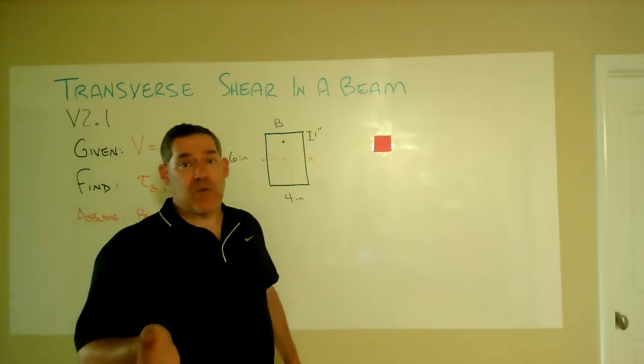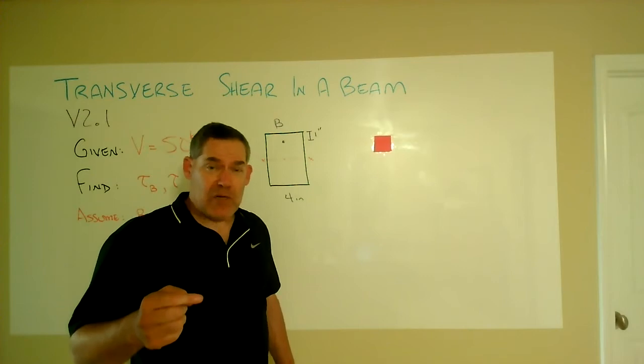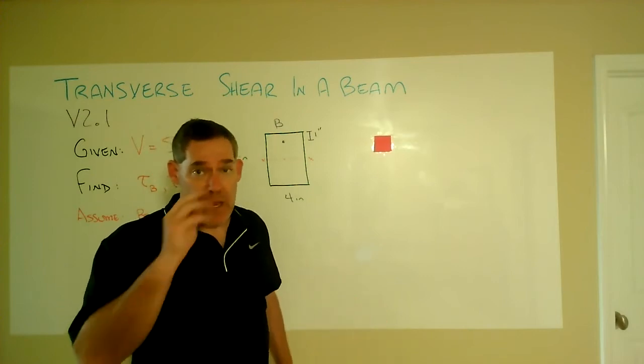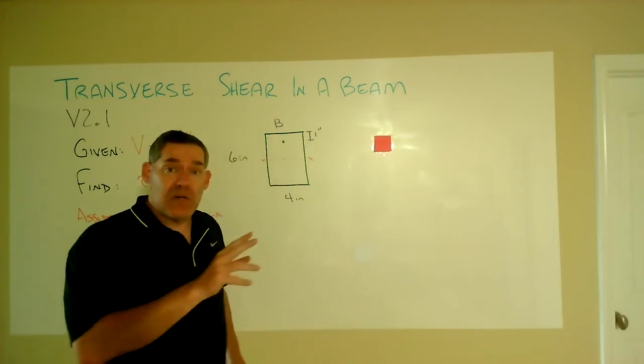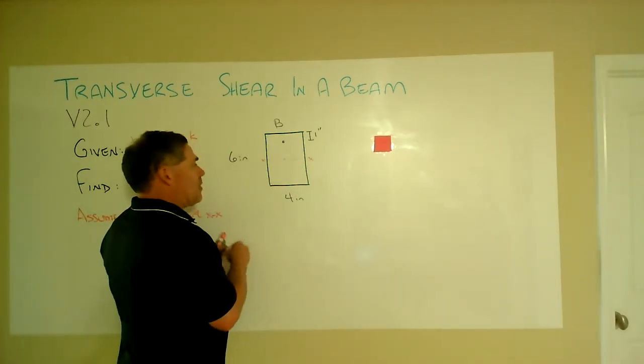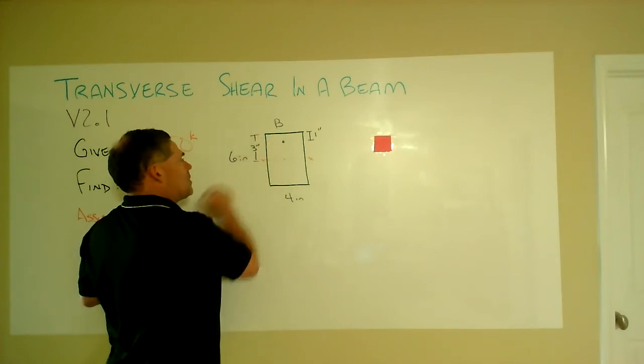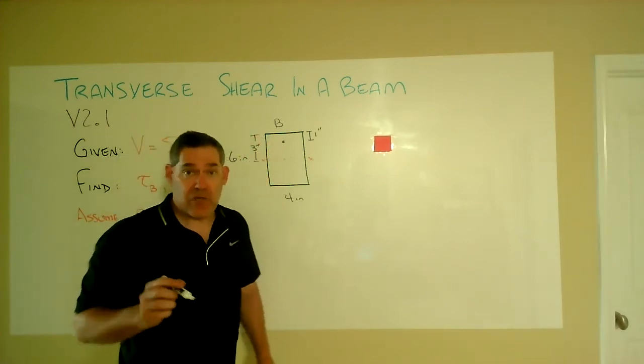Now, on this item, we know exactly where the neutral axis is. It's at the geometric centroid. Well, that's always going to be true for elastic behavior, but here we have a symmetric cross-section. So we know it's at the mid-height of this overall cross-section, from there to there in this symmetric case.